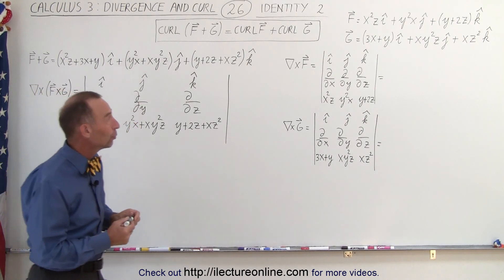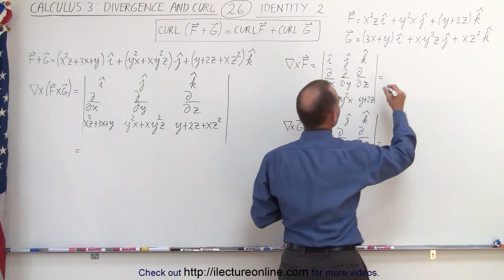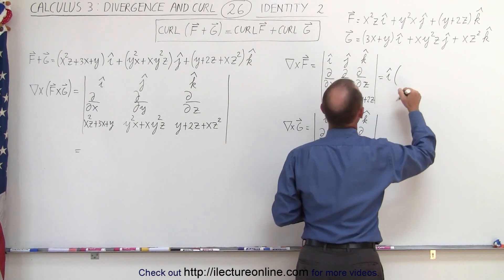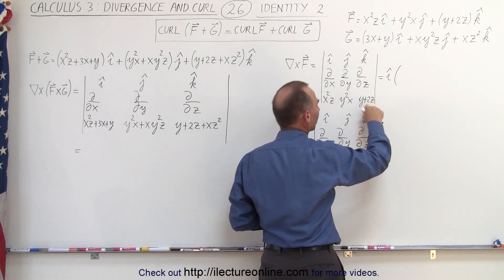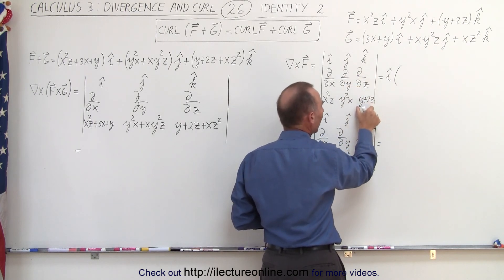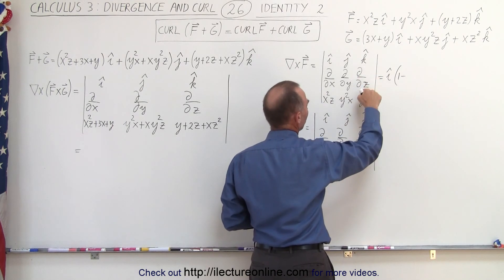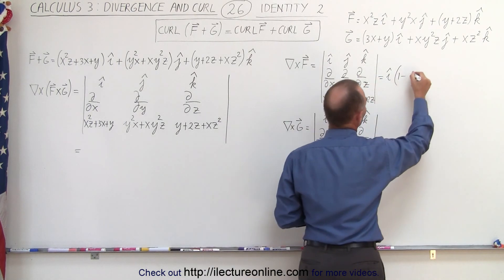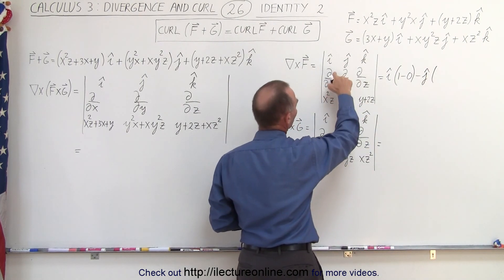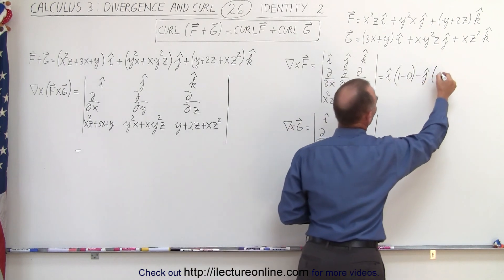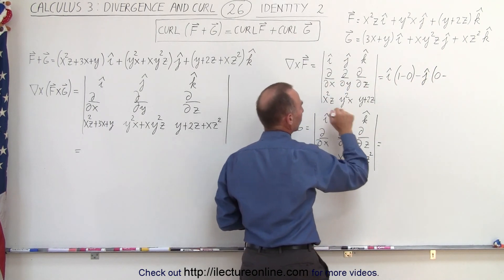So let's find the curl of each of the two vector fields. That's the format for finding the curl. We take i and multiply that times the partial derivative with respect to y of the y plus 2z component, which simply gives us 1, minus the partial derivative with respect to z of that term, which gives us 0. Then it's minus the j component: the partial derivative with respect to x of this component, which is 0, minus the partial derivative with respect to z of this component, which is x squared.